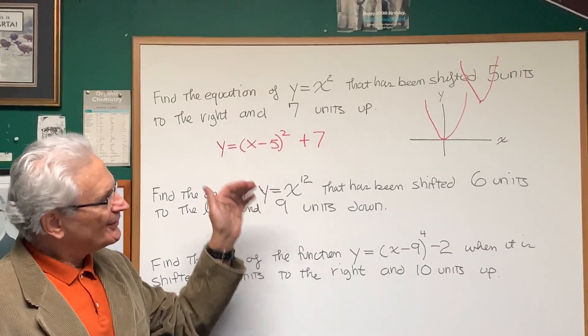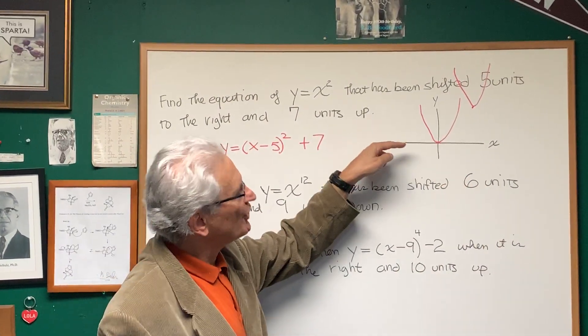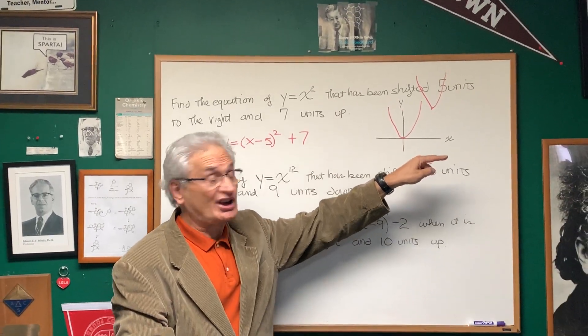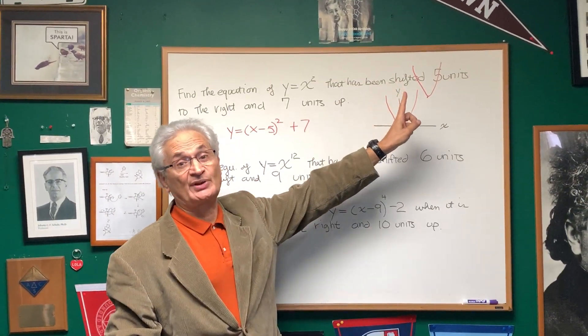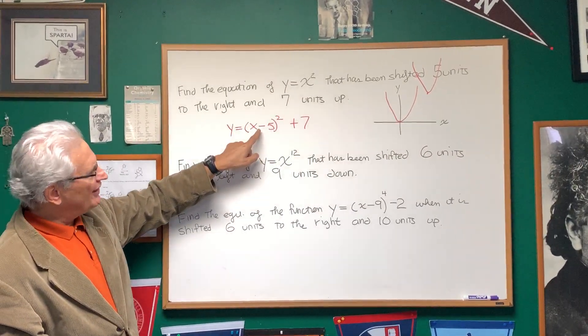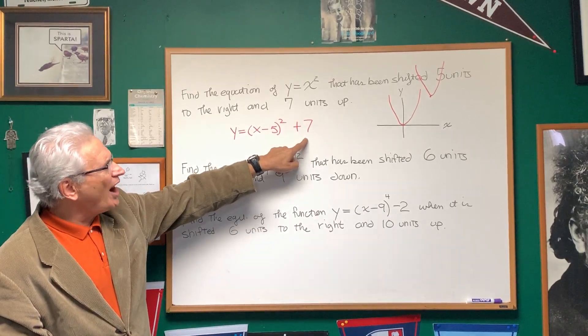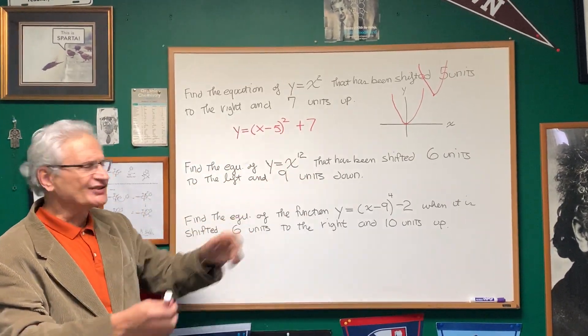Now notice that these two translations are both in the positive direction. To the right is in the positive direction horizontally. Up is in the positive direction vertically. So why is the x value, the number with the x value, negative, and the number that indicates the y shift, positive? Why is that?